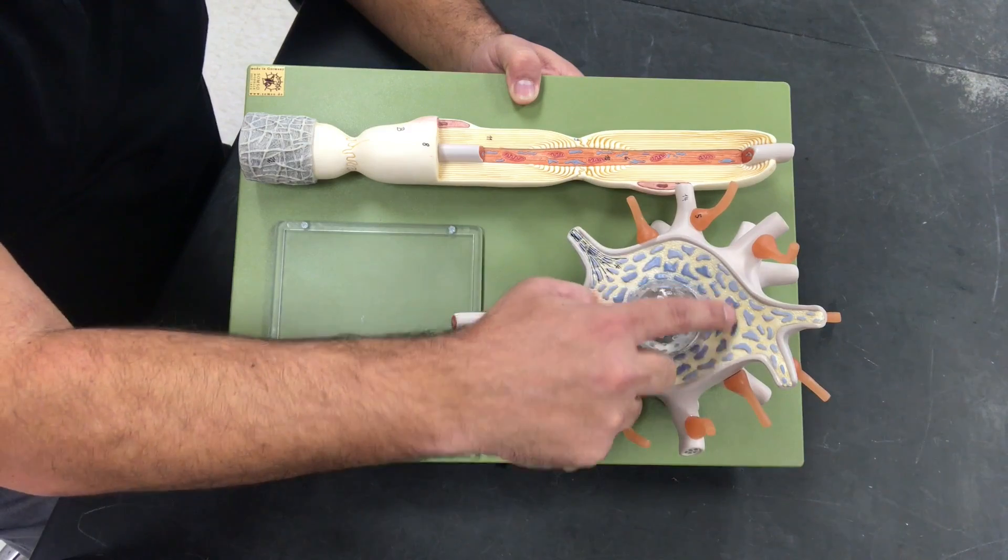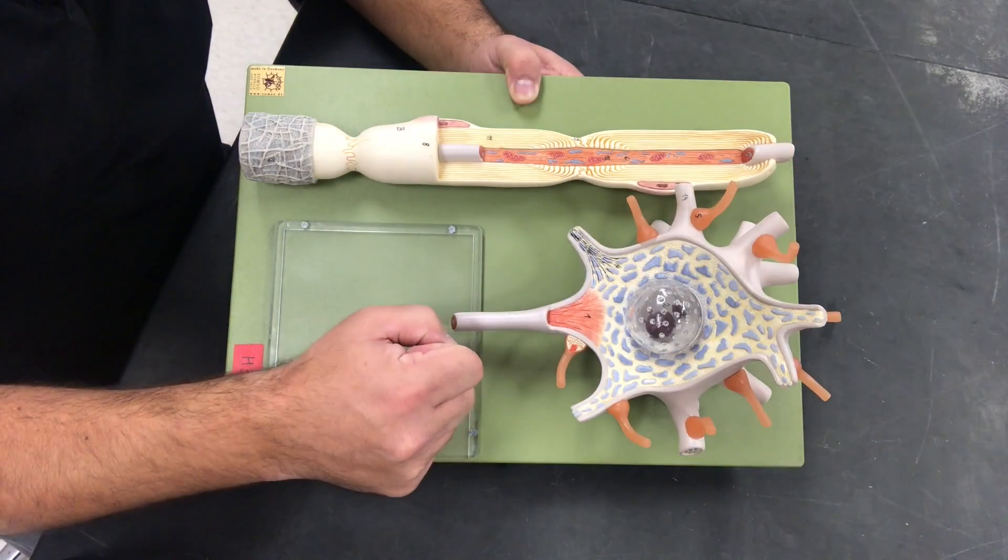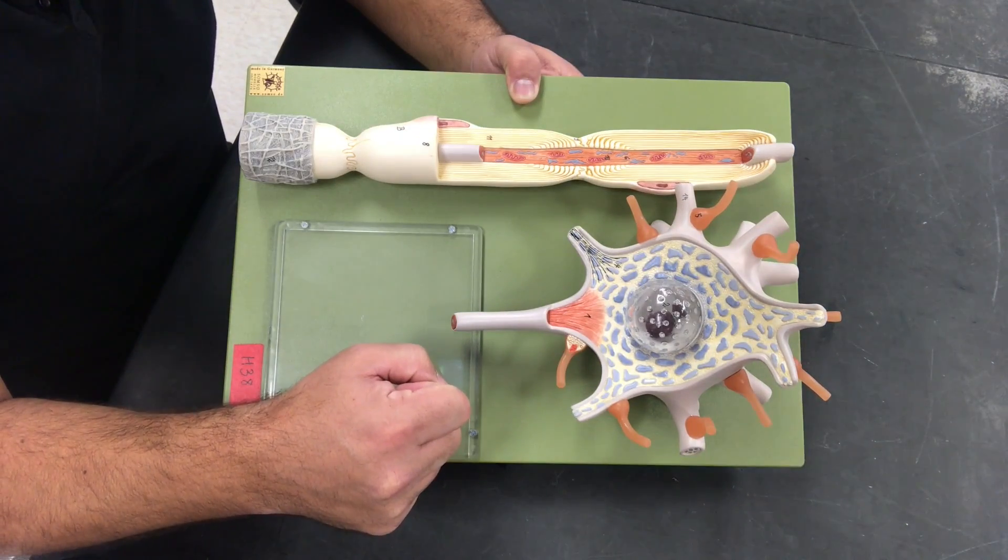Within the soma we're going to have all these little blue speckles. These are modified endoplasmic reticulums. They are called nissel bodies.